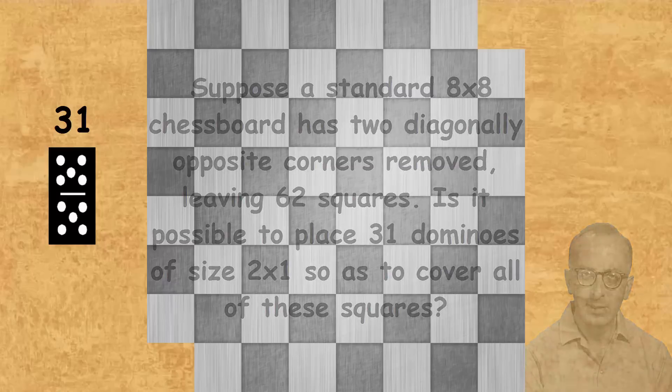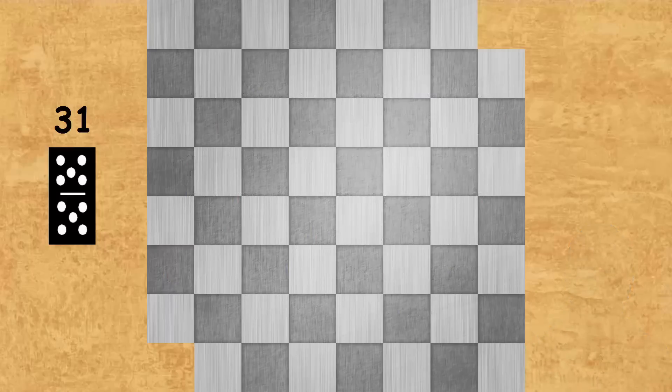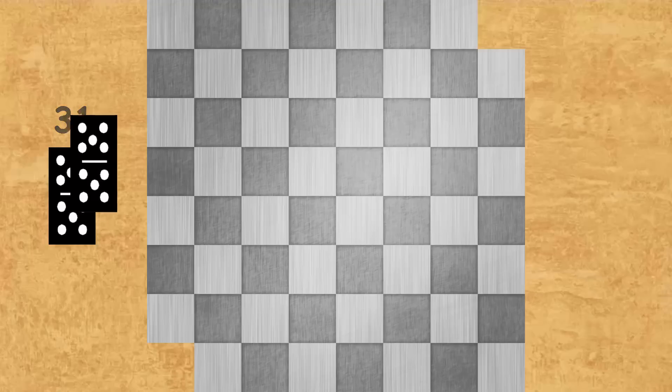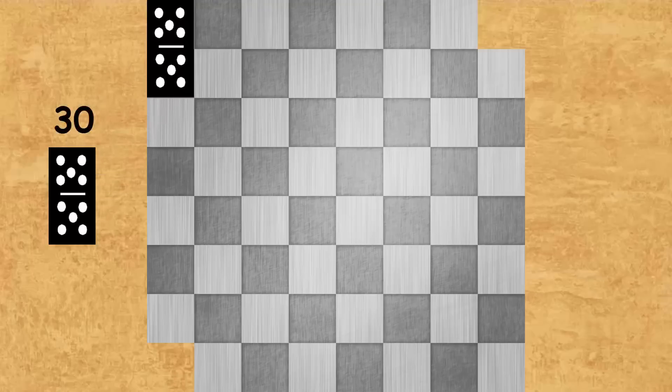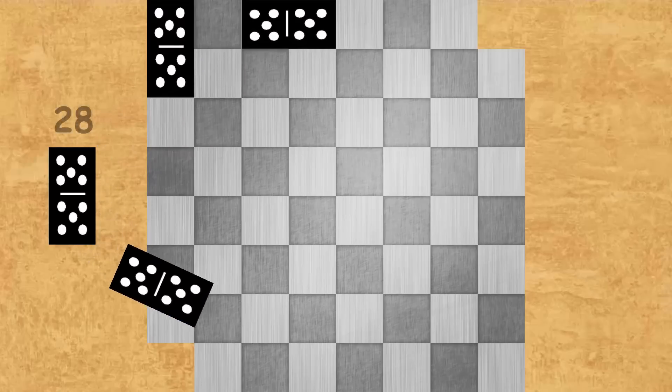There's more than one way to try and work this one out. I don't want to go into any of the explanation right now, but basically we're placing dominoes. We're arranging them in a way, and we want to see if it is possible to cover all these 62 squares.